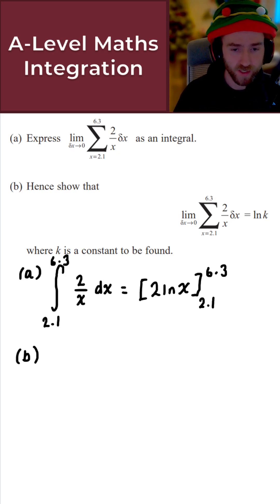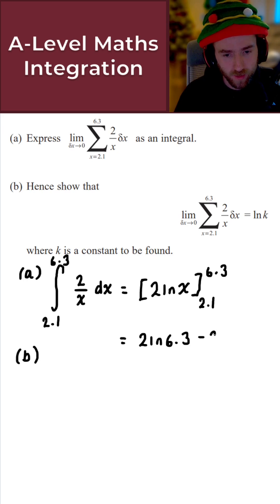You should be familiar with this process. If I do that, what I get is 2 ln(6.3) minus 2 ln(2.1).